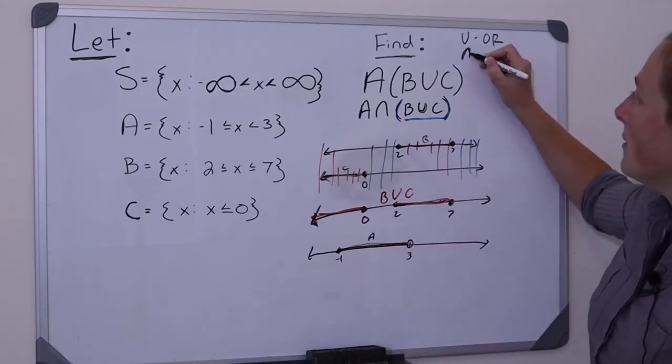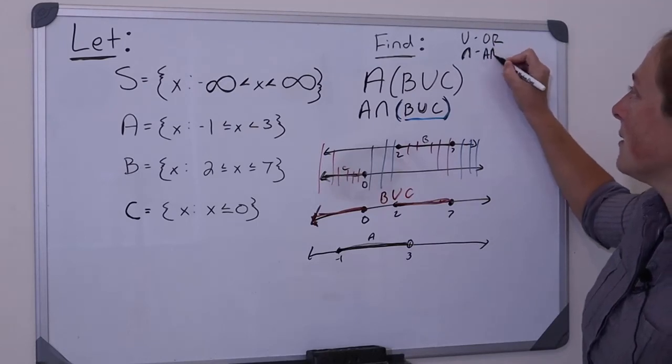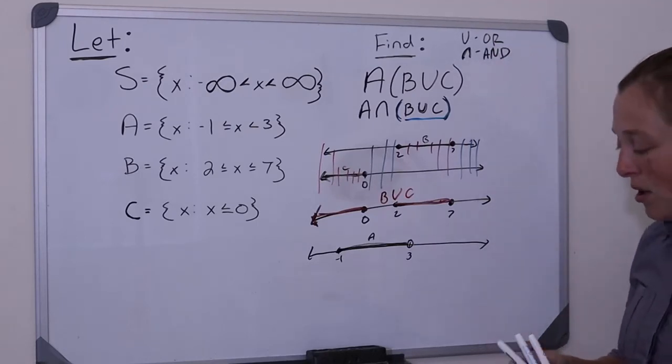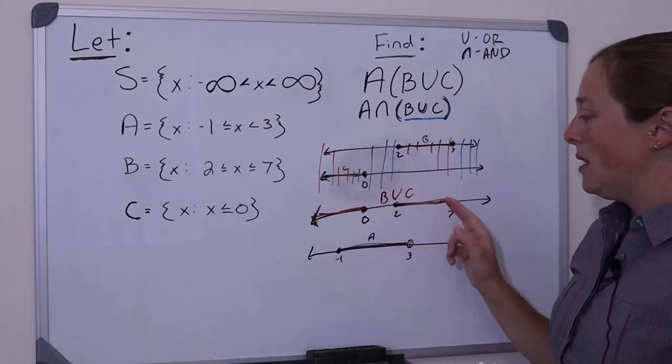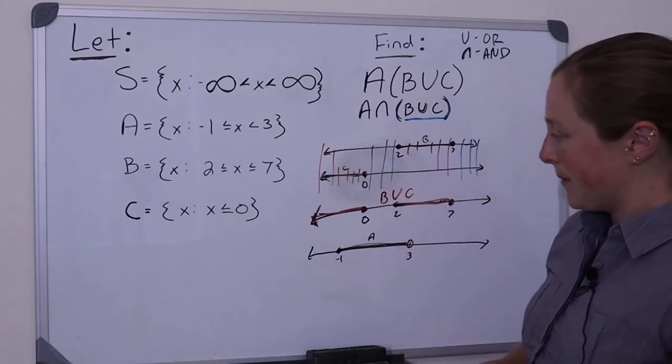Okay, so remember, what does intersection mean? Intersection is AND. So I'm looking for elements that belong to both this union and A.